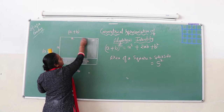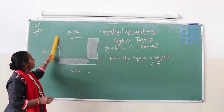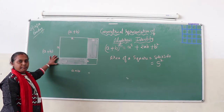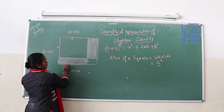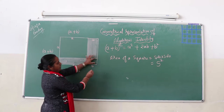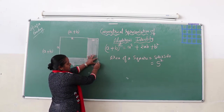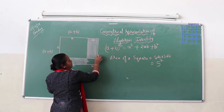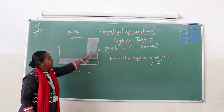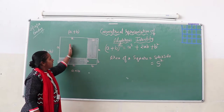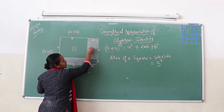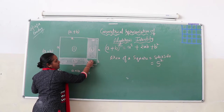This is b and this is a. Similarly, we will divide this side: a portion as a and the remaining as b. Same way, this side — this portion is a and this portion is b. Here also, this portion is b and this portion is a. Now this entire geometrical figure is divided into portions: this is portion 1, this is portion 2, this is 3, and this is 4.